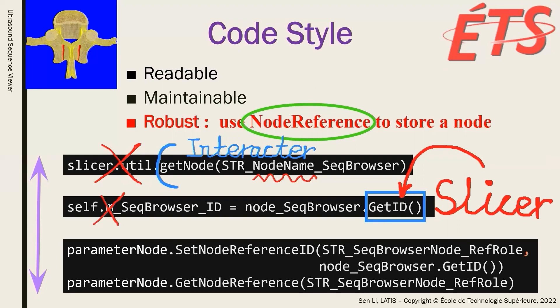The best way to store a node for persistent node reference is to call the function setNodeReferenceId and getNodeReference. You can specify any string as a reference role of your target node according to your own preference.